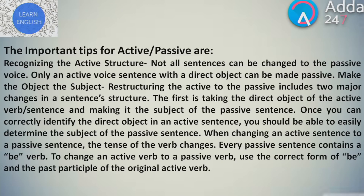The important tips for active or passive voice are: recognize the active structure — not all sentences can be changed to passive voice. Only an active voice sentence with a direct object can be made passive. Make the object the subject. Restructuring the active to the passive includes two major changes in sentence structure. First, take the direct object of the active verb and make it the subject of the passive sentence. Once you correctly identify the direct object, you can easily determine the subject of the passive sentence. When changing an active sentence to passive, the tense of the verb changes. Every passive sentence contains a be-verb. Use the correct form of 'be' and the past participle of the original active verb.